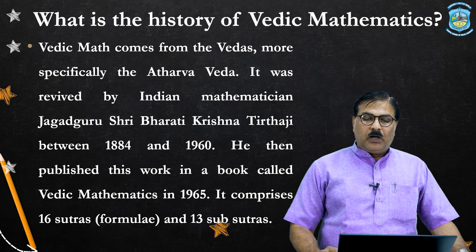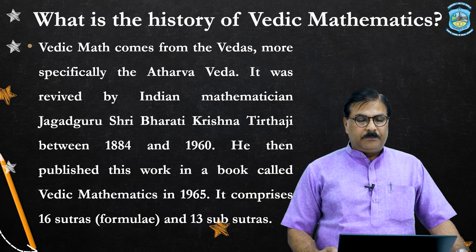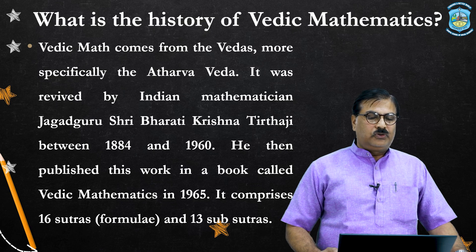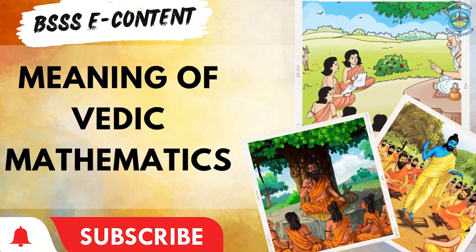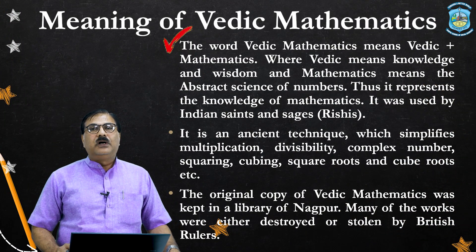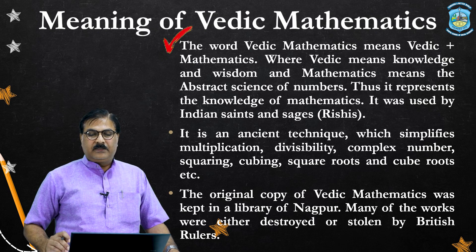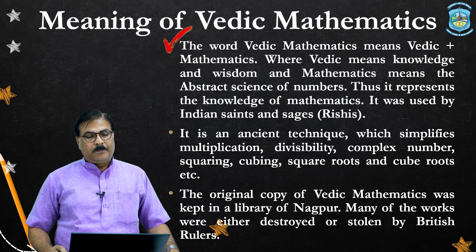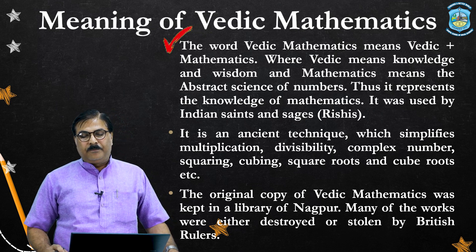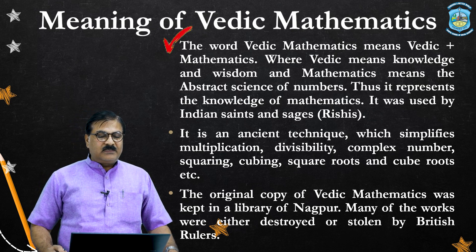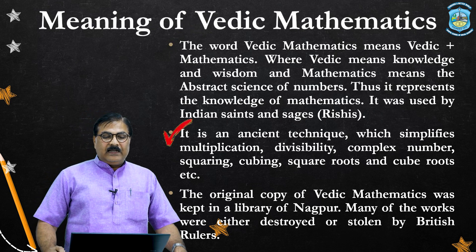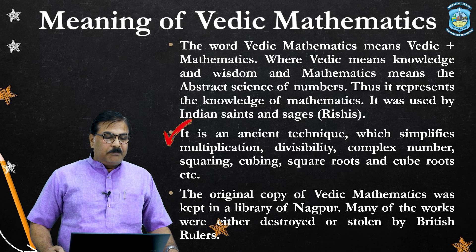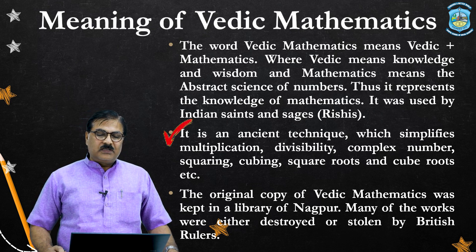He then published his work in a book called Vedic Mathematics in 1965. It comprises sixteen sutras — that is, formulae — and thirteen sub-sutras. The term 'Vedic mathematics' is a combination of two words: Vedic, meaning knowledge and wisdom, and mathematics, meaning the abstract science of numbers. Thus it represents the knowledge of mathematics used by Indian saints and sages. It is an ancient technique which simplifies multiplication, divisibility, complex numbers, squaring, cubing, square roots, and cube roots.